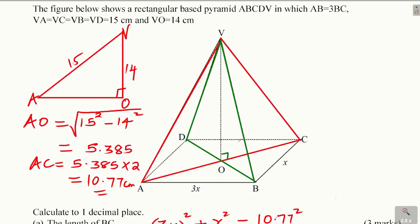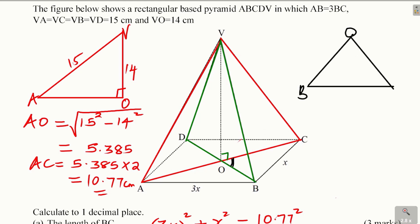Looking carefully at the diagram, the required acute angle is here. To find it, we extract triangle BOC. BO is equivalent to OC, so it forms an isosceles triangle. BC is 3.4 and AB is 3 times 3.4 equals 10.2.